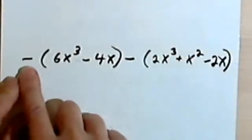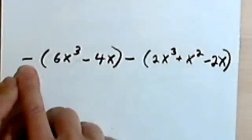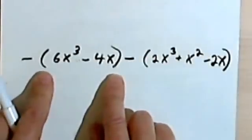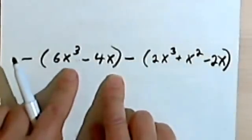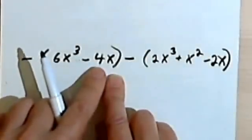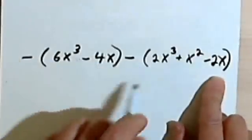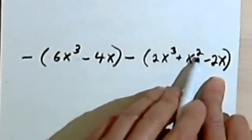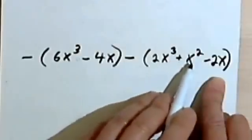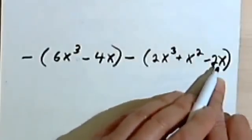Okay, so here I'm starting with a subtraction. I'm starting with a negative times the polynomial 6x³ - 4x minus the polynomial 2x³ + x² - 2x.